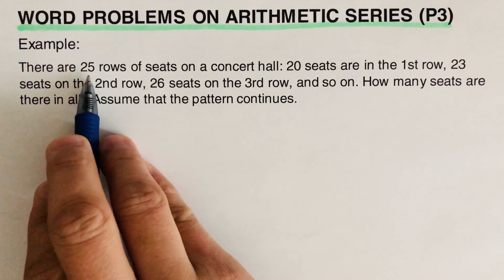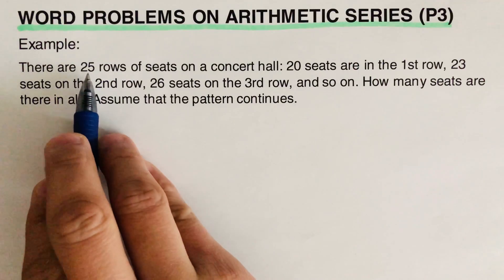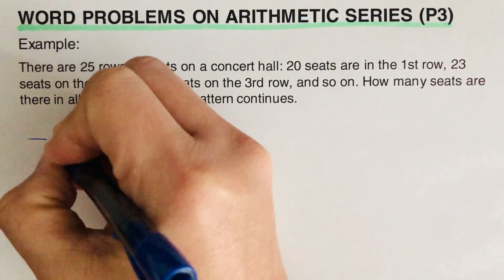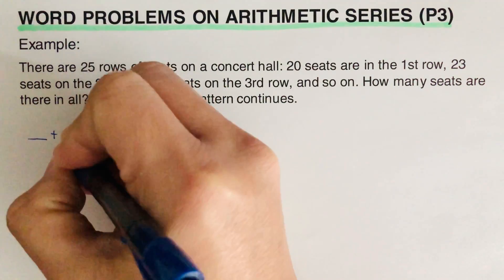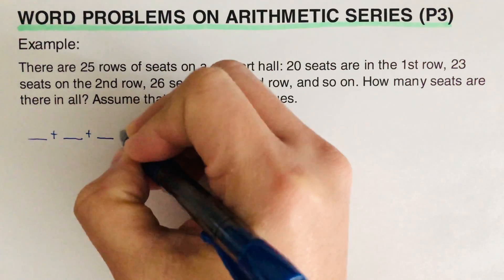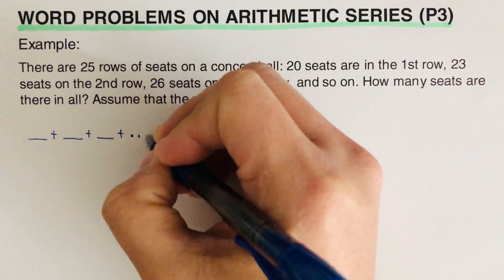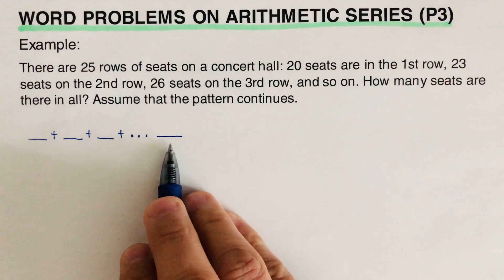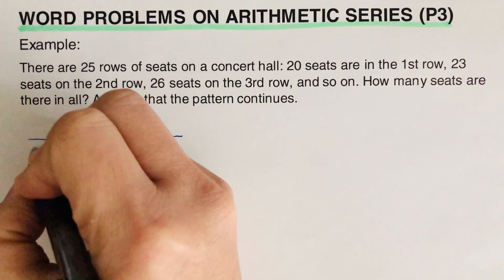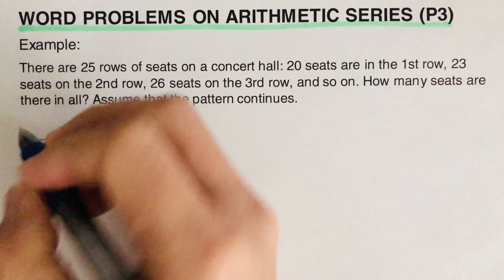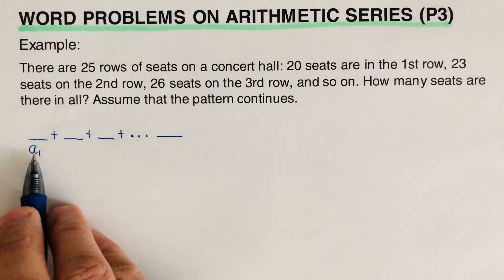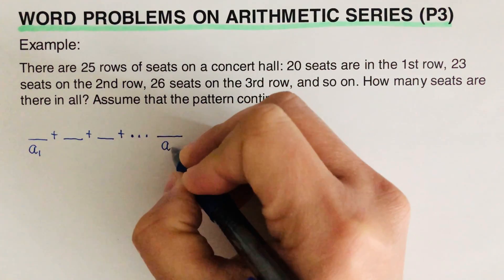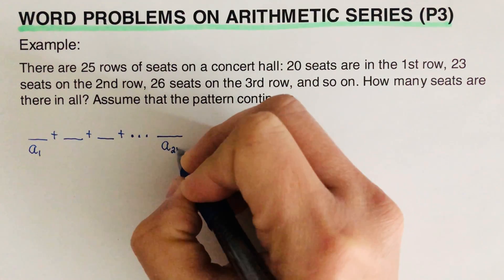Based on the first statement, I'm going to make 25 blanks that stand for the number of rows. So the first blank, the second, the third, and then I'll put three dots in between, and this will be our 25th row. I'll label this as a-sub-1, the first term, and this one is a-sub-25, the 25th term.